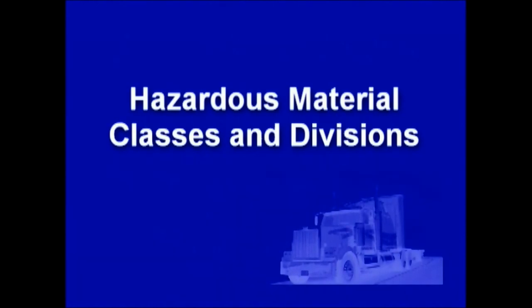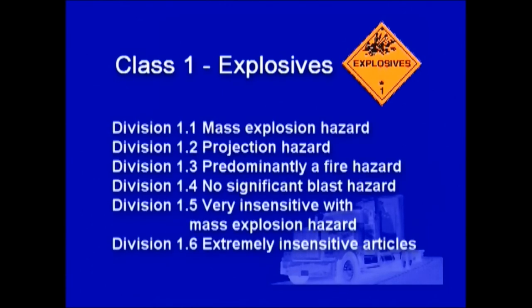Let's start with the HM classes and divisions. There are nine classes of hazardous materials, each with divisions that further identify the HM. Class 1 covers explosives that are identified by orange placards. Within Class 1, there are six divisions. Division 1.1 covers explosives with mass destruction potential. Division 1.2 denotes projectile explosives. Class 1.3 covers materials with a primary fire hazard. Class 1.4 denotes explosives that have no significant blast hazard. Division 1.5 is for very insensitive explosives, such as blasting caps.